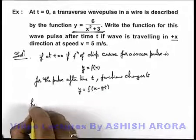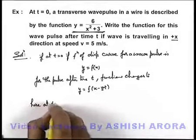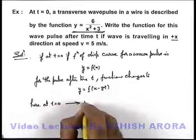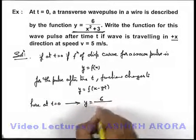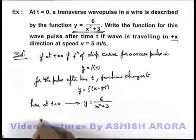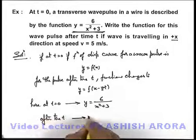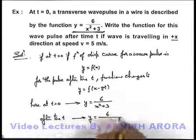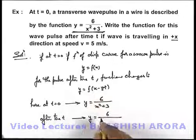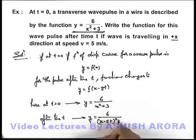So here in this problem, at t equal to zero, we are given that y is equal to 6 upon x square plus 3. This implies we can write after time t, this function will be 6 upon, we should change x to x minus v t, it will be x minus 5 t whole square plus 3.